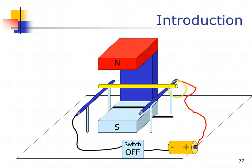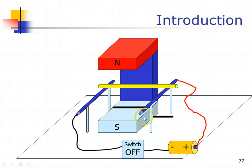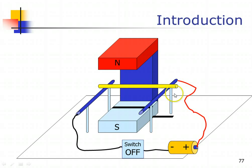First, recall that when there is an electrical current flowing through the copper rod, a magnetic field will be created around it. Therefore, within this region, there are now two magnetic fields interacting with each other: the first caused by the permanent magnet — the north and south poles — and the second created around the copper rod when current flows through it. As a result, a force will be created between these two.